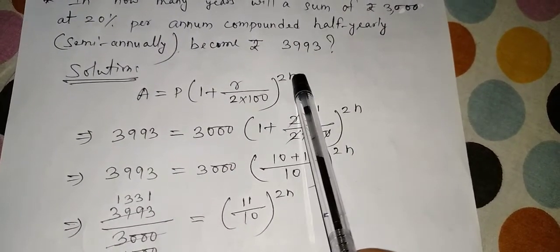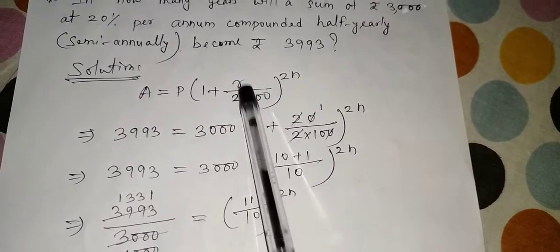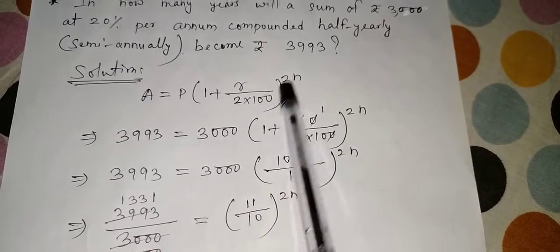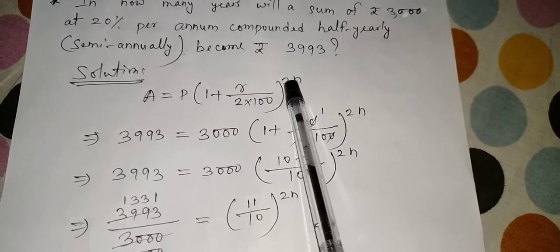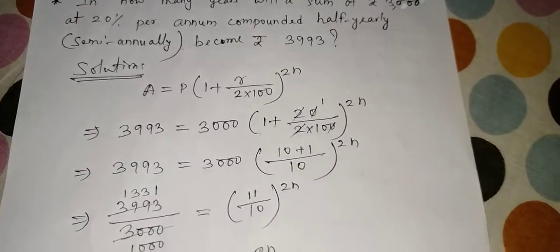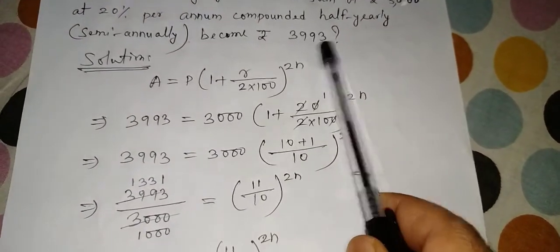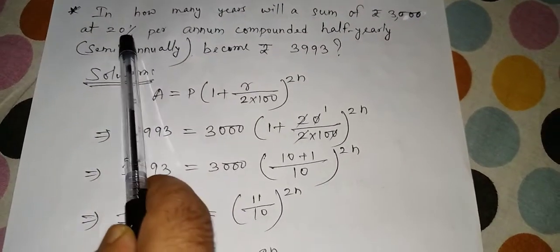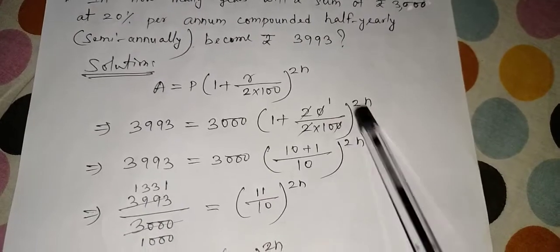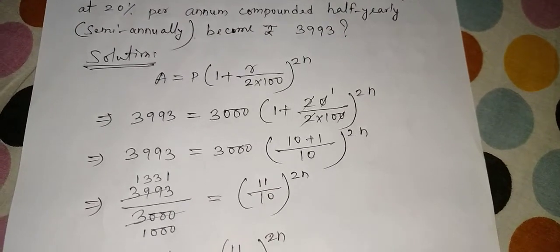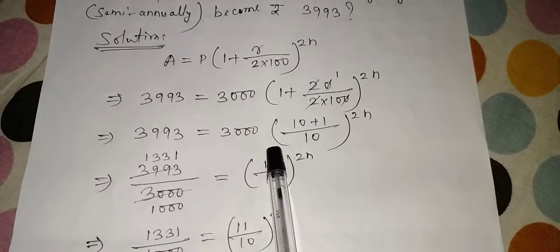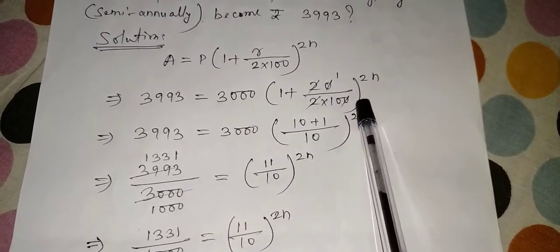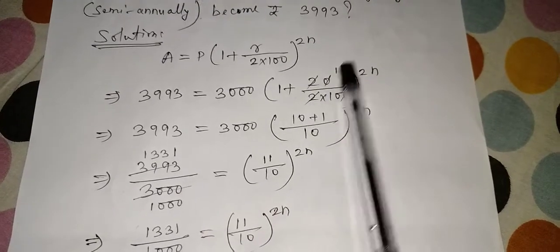A = P(1 + r/(2×100)). So this 2 is new in the formula because of half-yearly, and to the power 2n. So this 2n also is new thing. Normally it is r/100 and it is n, but now you have to write r/(2×100) and power will be 2n. These are the two changes in case of half-yearly. Please note it down. Now amount value you know, this is the amount. Principal you know, it is 3000. 1 + r value is 20, 20/(2×100) to the power 2n.